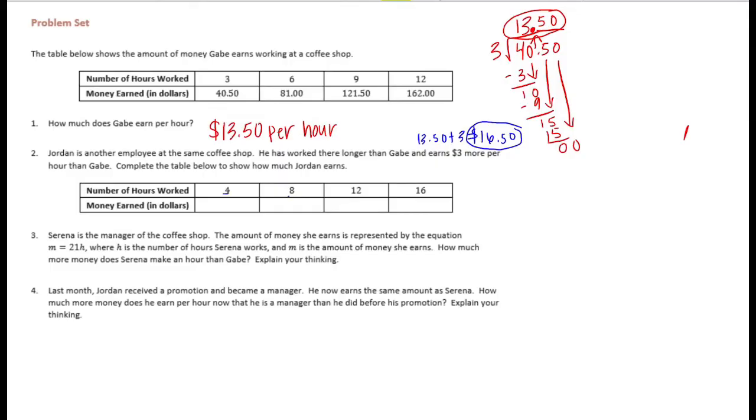And we want to know after 4, 8, 12, and 16 hours how much he would have made. So let's do $16.50 times 4. 4 times 0 is 0, 4 times 5 is 20, carry my 2. 4 times 6 is 24, plus 2 is 26. 4 times 1 is 4, plus 2 is 6. Now I have 2 digits behind my decimal point in the problem, so I'm going to move it over 2 places here. And he would make $66 after 4 hours.